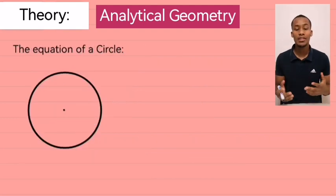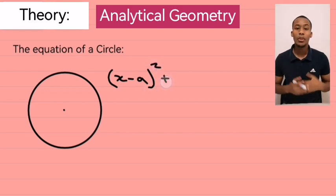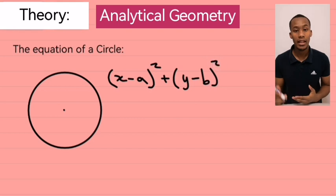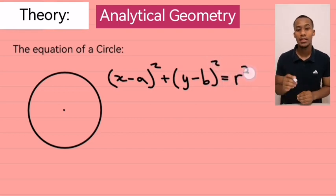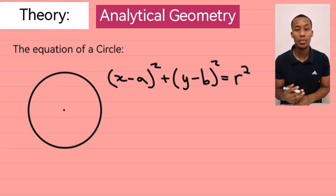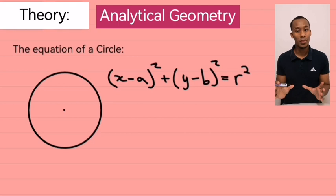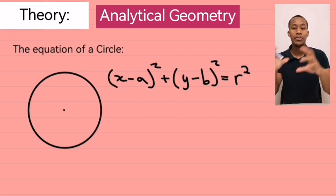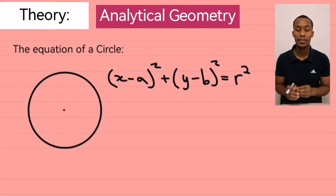And this brings us to the last part, which is the equation of a circle. Now, the equation of a circle can be represented by x minus a squared plus y minus b squared equal to r squared. Notice this formula looks very similar to the distance formula. Instead of having the square root, we now have the square on the other side.